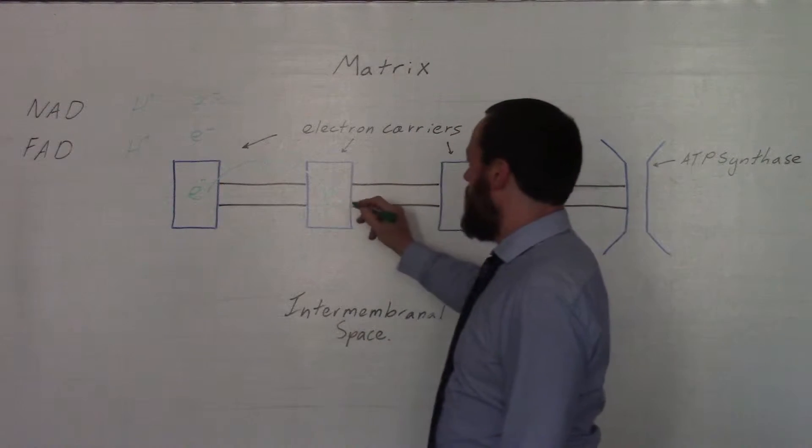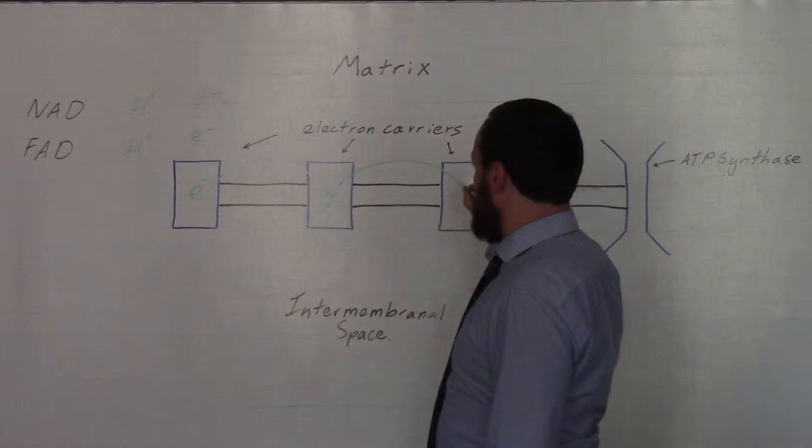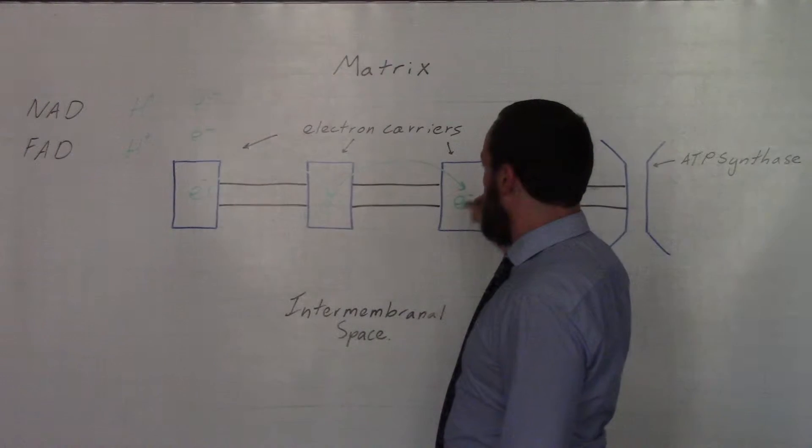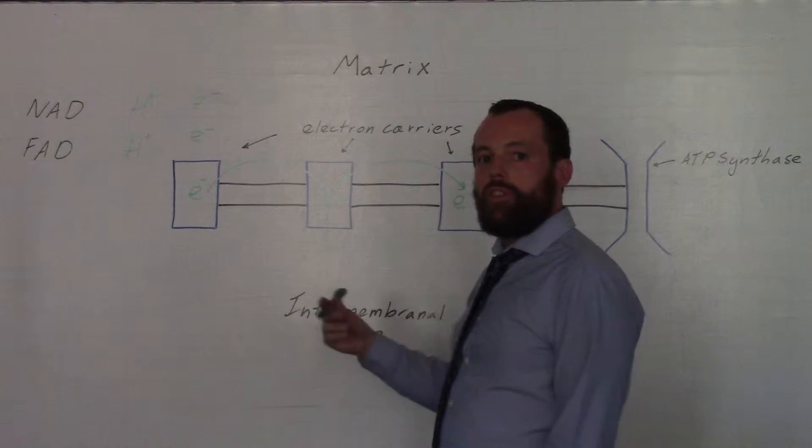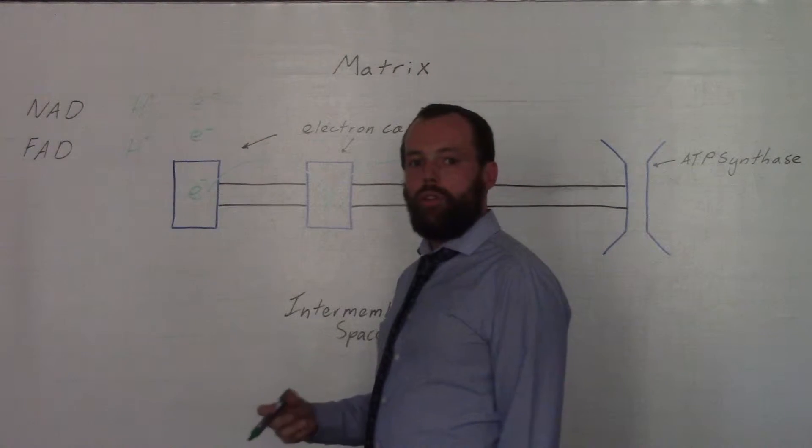Oxidation is loss. The same happens again as it moves from this electron carrier onto the last one. So we have a series of reduction and oxidation reactions as the electrons move along these electron carriers.